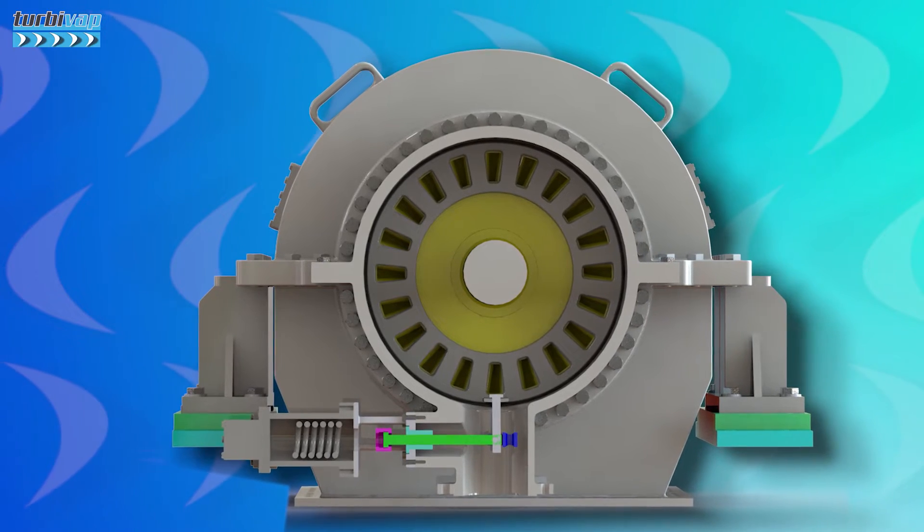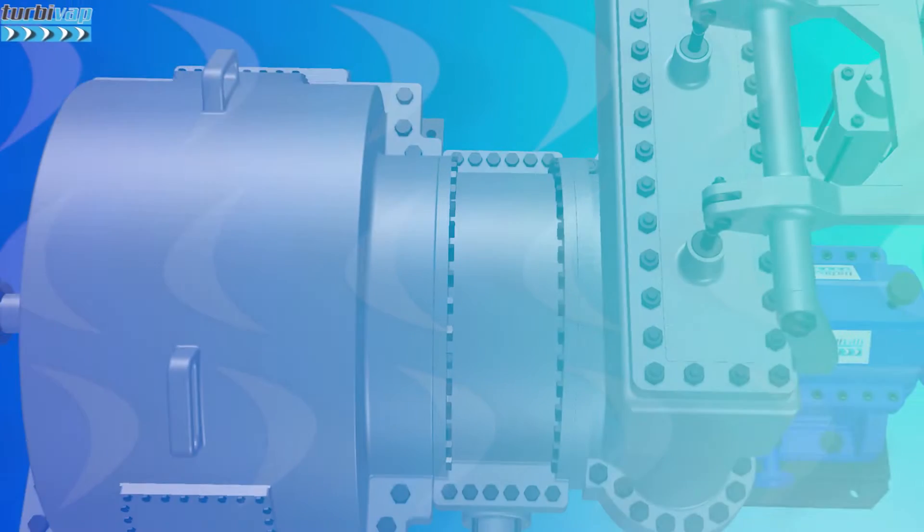Regenerative cycle extractions use steam from inside the turbine for heating boiler feed water, and are almost always of the uncontrolled type. They have the advantage of being low cost and easy to operate. They are normally used to power cycle equipment such as deaerators and preheaters, and for industrial processes that do not require constant pressure.